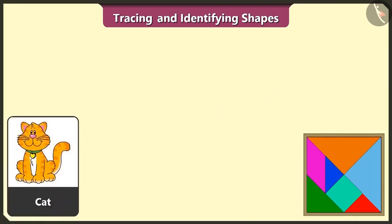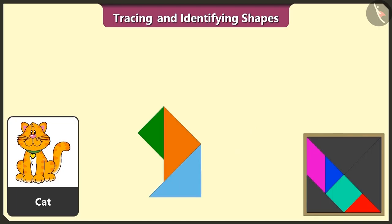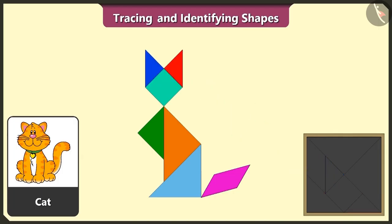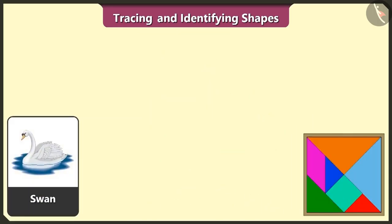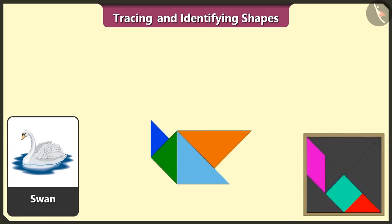This is a cat. Let's make a cat using three triangles, one quadrilateral, one square, and the remaining two triangles. See, the cat is ready! This is a swan. Now we will make a swan using four triangles.